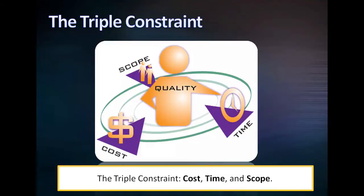These three elements of a project are known to work in cycle with one another. Where one of these elements is restricted or extended, the other two elements will then need to be either extended and increased or restricted and reduced in some way. For example, if a client introduces additional scope to the project, you would need more time and more money to execute the additional scope.